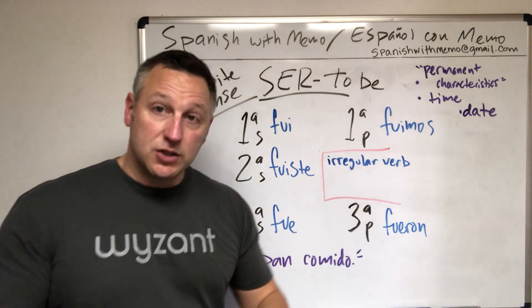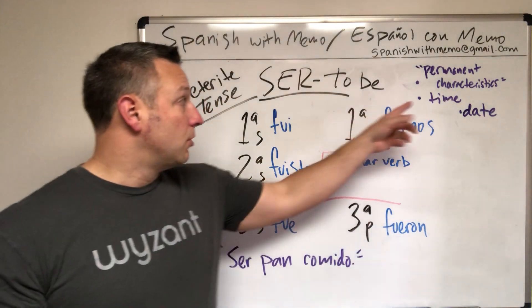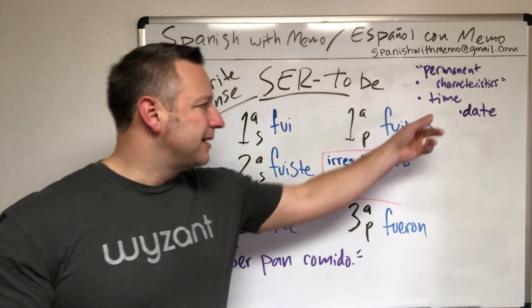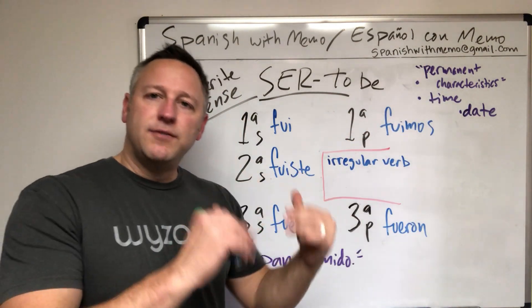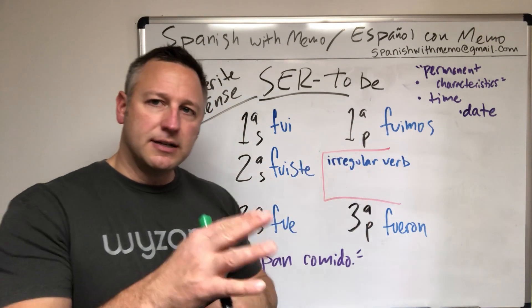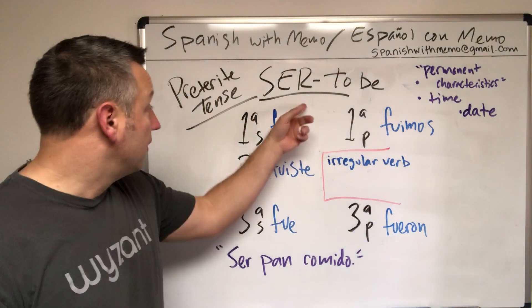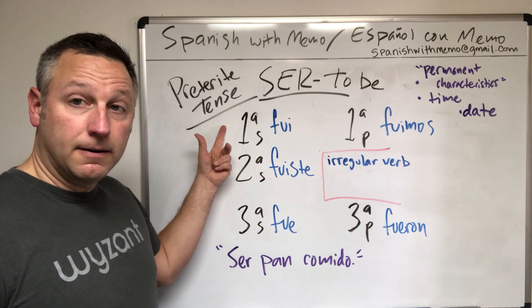Ser means to be, which we know that, right? Ser is more of a permanent characteristic. It deals with time and date. Refer back to the video where I discuss ser in greater detail. However, today we're going to cover the preterite tense of ser.